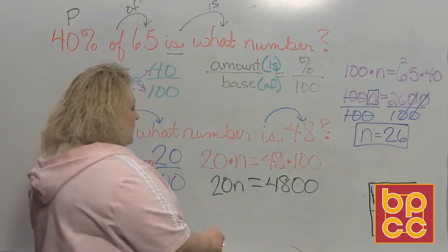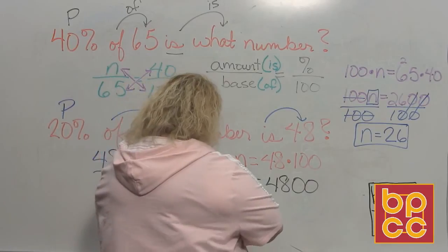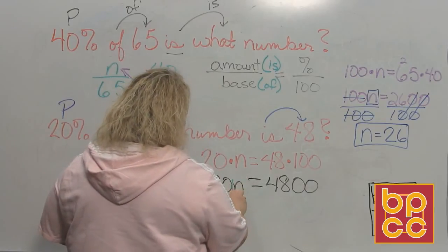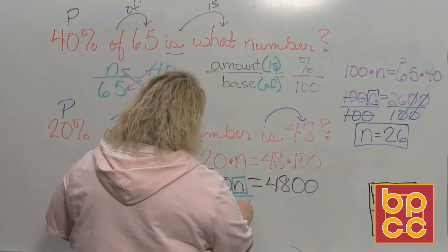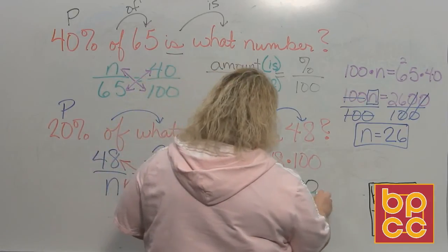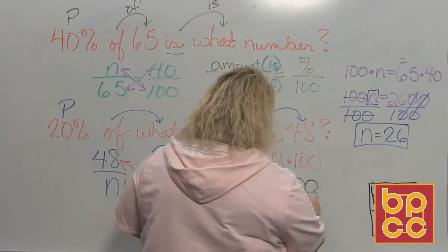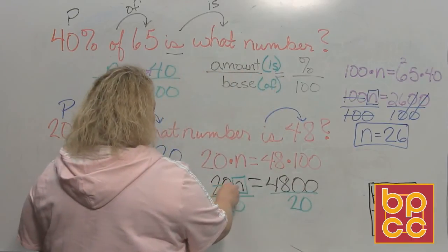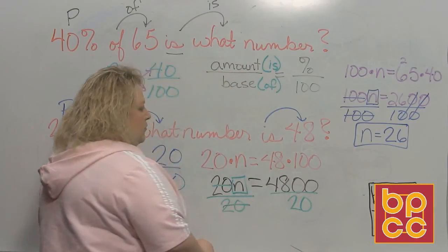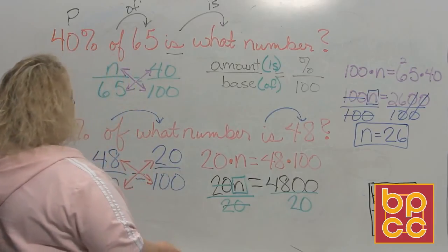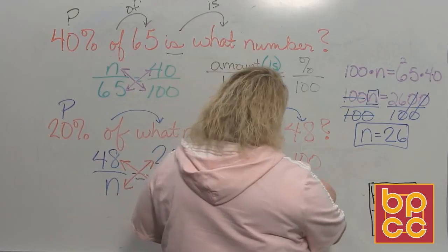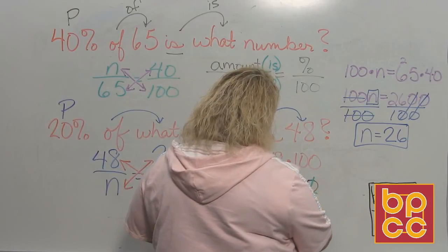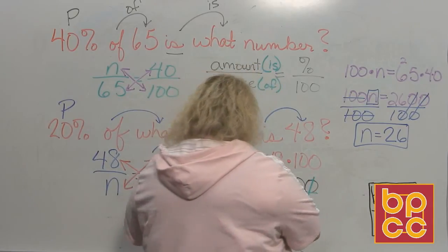So then to get the answer to this question, I have one step left, and that would be to get this little n by itself. So to undo that, you do the opposite, and always the opposite of multiply is divide. So 20 divided by 20 is just one because any number divided by itself is one. And then right here, this is a power of 10, so we can cross that off and get the shortcut version.